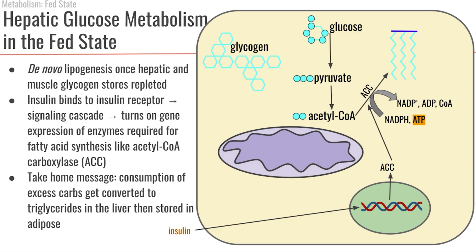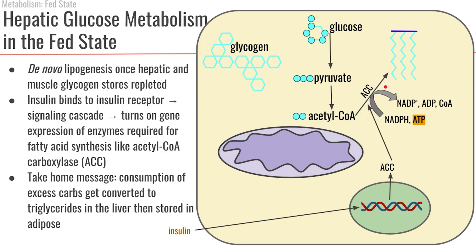Insulin, which was previously stimulating glycogen synthesis through glycogenesis, now that we've repleted our glycogen stores, is going to stimulate the expression of enzymes involved in de novo lipogenesis in the liver. This green circle represents the nucleus, where insulin initiates a signaling pathway that increases gene expression of enzymes such as acetyl-CoA carboxylase, abbreviated as ACC.